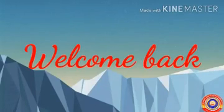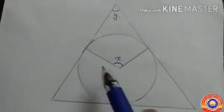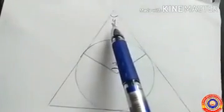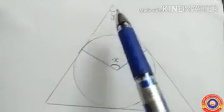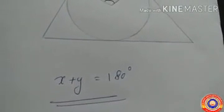Hi students, welcome back to our class. Today we are going to discuss tangents and angles in a circle. The angles between the radii through two points and the angle between the tangents at these points are supplementary. Here, x is the angle between the radii and y is the angle between the tangents — these two angles are supplementary, which means angle x plus angle y equals 180 degrees.